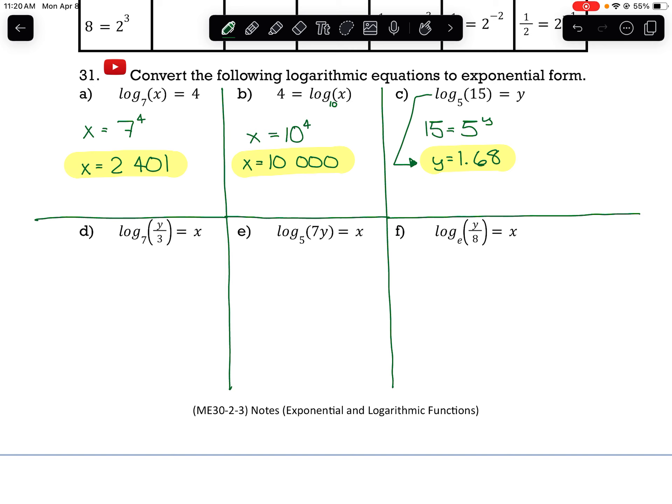Now moving down to the bottom row, all three of these involve variables, which means that we're not necessarily going to be able to solve them to find the value that they represent. So for part D, log base 7 of y over 3 equals x.